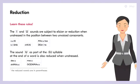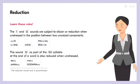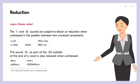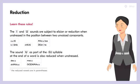First of all, the rule of reduction. In Japanese, the sounds i and u are subject to elision — they disappear — or reduction, weakening, in the position between unvoiced consonants. Look at the slide and repeat after me.